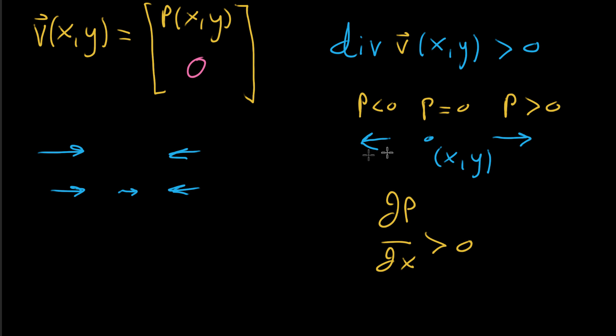But remember, this isn't the only way that a positive divergence might look. You could have another circumstance where, let's say, your point x, y actually has a vector attached to it. So this here represents our point x, y.